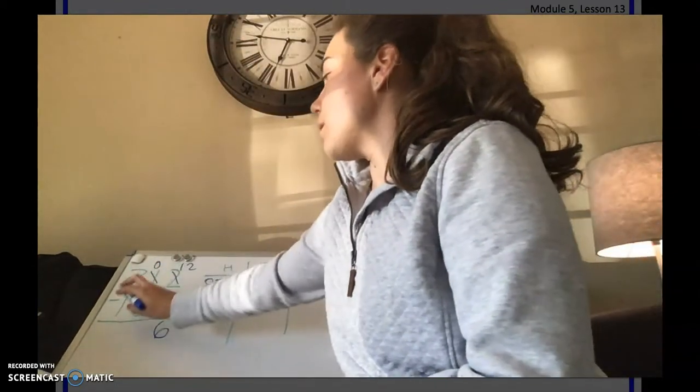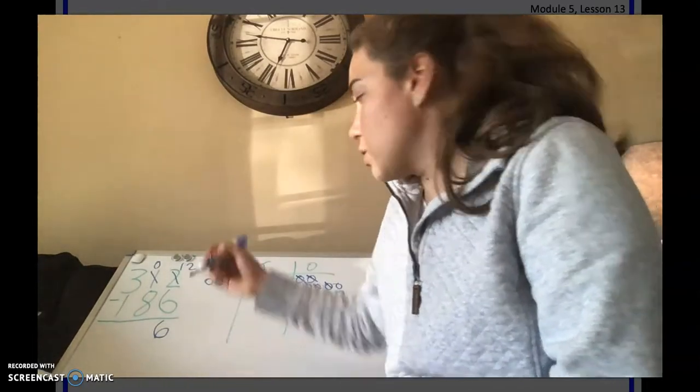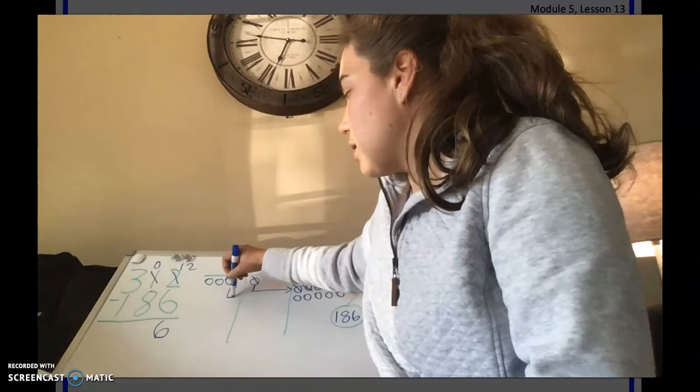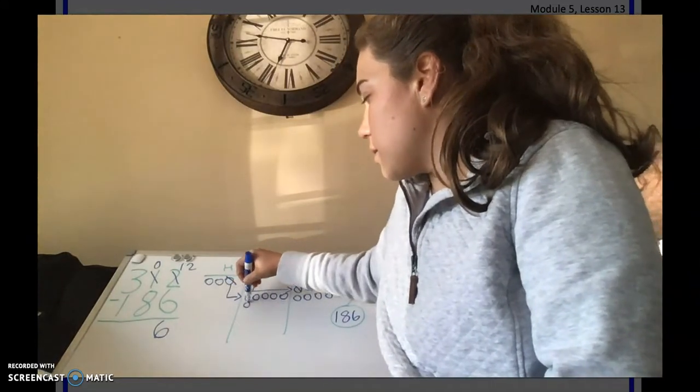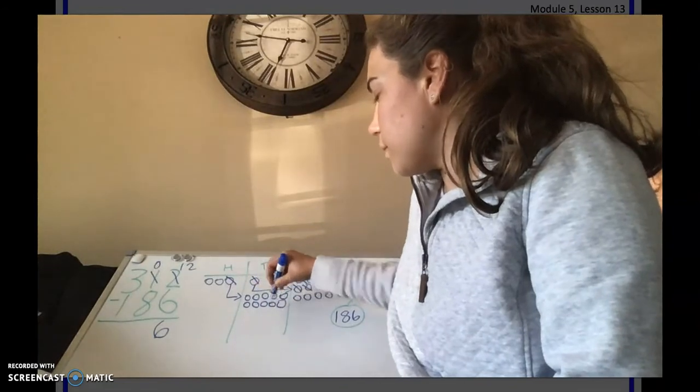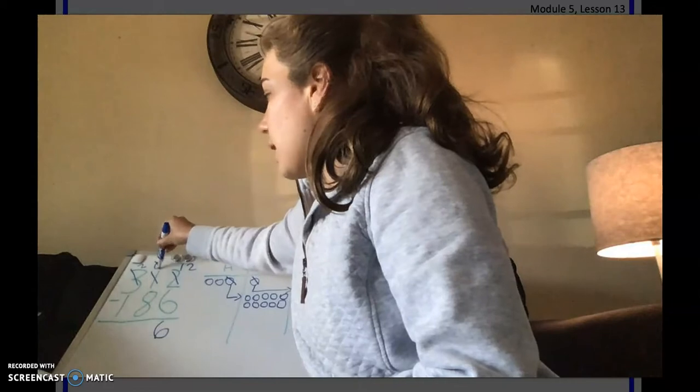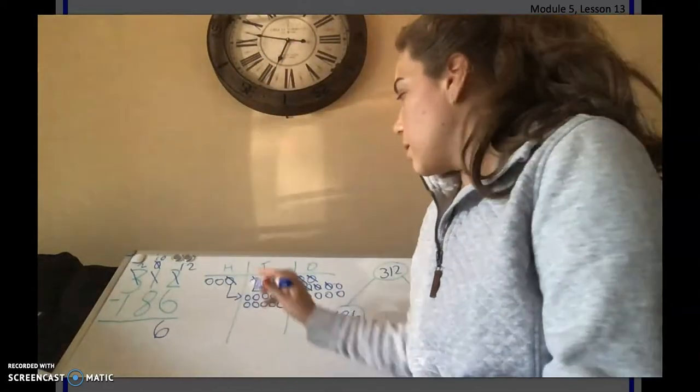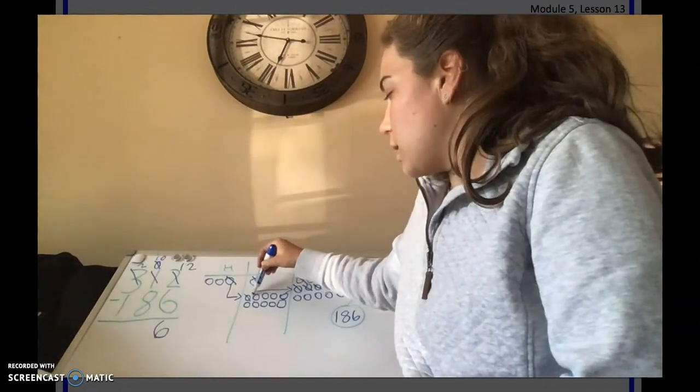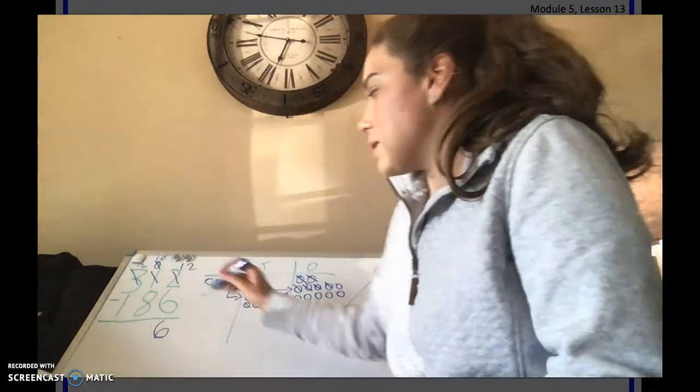And now we need to do 0 minus 8. Can we do that? No. So we need to trade 1 hundred in for 10 tens. So now we're going to take 1 hundred away, and now we have 10 tens. So we're going to do 10 minus 8 now. So let's take away 8: 1, 2, 3, 4, 5, 6, 7, 8. We only have 2 tens left.